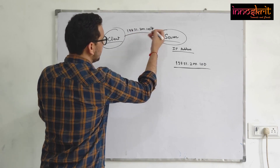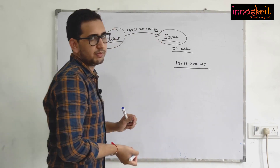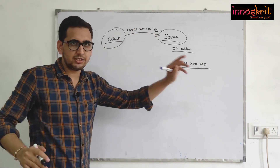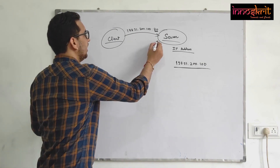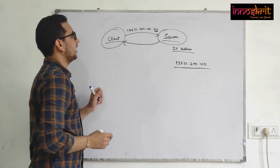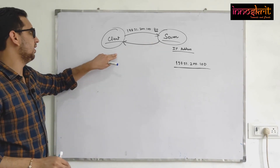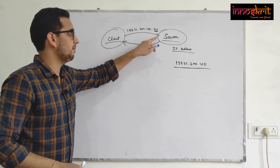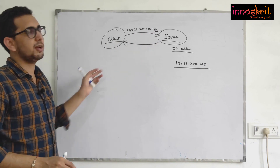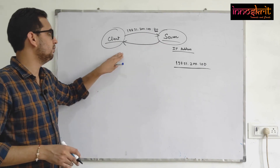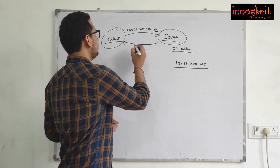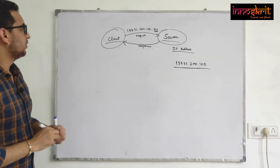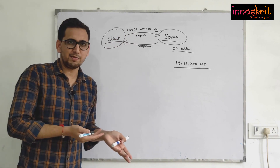The client types the IP address, along with a port, into the web browser and is able to reach the server and ask for content. The server returns the data to the client. Note that the server doesn't need to know about the client beforehand — because the client makes the request, the server simply responds to that same request.